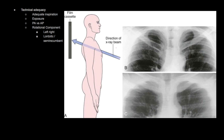Additionally, the direction of the x-ray beam is also important. This would be an example of a lordotic or semi-recumbent view — you see that the medial aspects of the clavicles are now projecting at or above the first posterior ribs, which is not ideal unless you're specifically trying to look at the lung apices. But on a regular PA film, we want the direction of the x-ray beam directed directly at the patient in a posterior-anterior fashion, and therefore the clavicles will line up around the third posterior ribs.